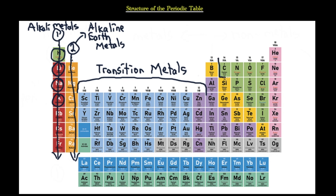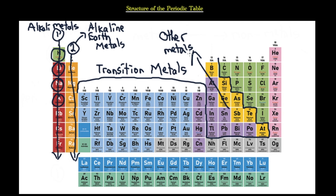Everything on the left side of the staircase, not including the transition metals, is going to be classified as other metals — metals that have different properties from the transition metals, the alkaline earth metals, and the alkali metals, with their own special properties. Then elements like carbon, nitrogen, oxygen, phosphorus, sulfur, and selenium are called other non-metals.